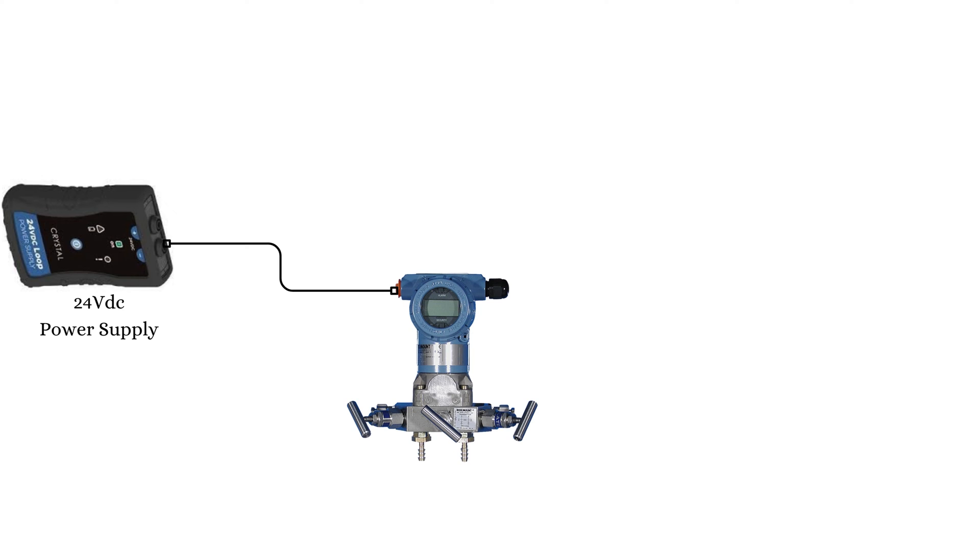If the differential pressure flow transmitter is in the field, then isolate the DP transmitter. Flush the differential pressure transmitter in a closed drain if it comes into contact with a dangerous process medium like a hazardous chemical.